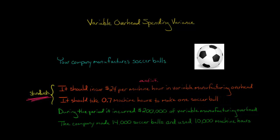So those are the standards. In terms of what actually took place during the period, the company incurred $200,000 of variable manufacturing overhead costs. The company made 14,000 soccer balls, and it took 10,000 machine hours to do that. So the company used 10,000 machine hours, cost $200,000 total, and produced 14,000 soccer balls.